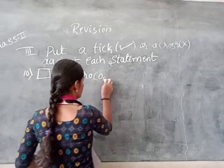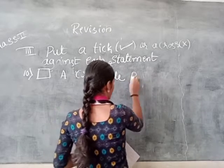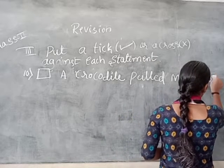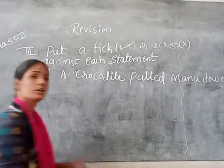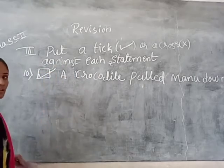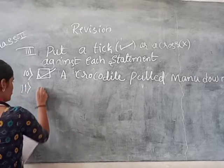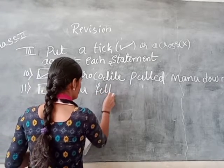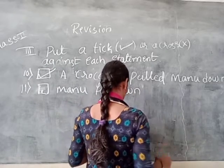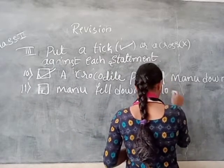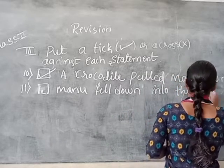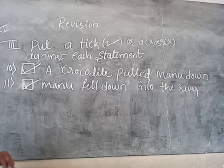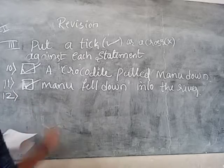Next: a crocodile pulled the man down. Has it pulled the man down? Yes it is — take the right mark. Next: Manu fell down into the river. Has he fallen into the river? Yes, he fell down. So for that, the answer is right.